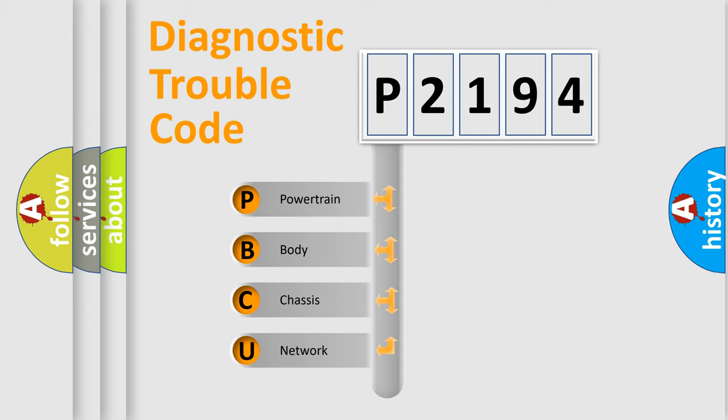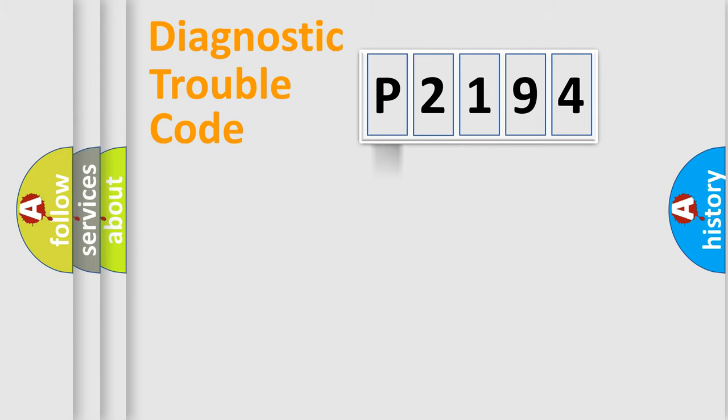We divide the electric system of automobile into four basic units: powertrain, body, chassis, and network. This distribution is defined in the first character code.